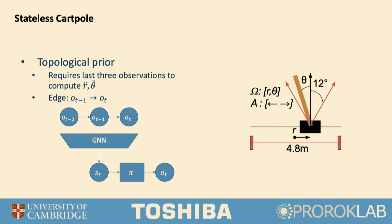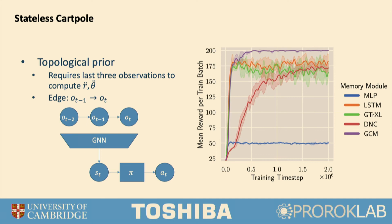We ran experiments comparing GCM against state-of-the-art sequence models. On the x-axis is training time step; on the y-axis is reward. Baselines include an MLP with no memory, LSTM, GTrXL — a transformer designed specifically for reinforcement learning — and DNC, the differentiable neural computer. GCM is in purple. Two things to point out: GCM is really the only one that can converge to the maximum reward here. And second, the variance shading — these other sequence models tend to have quite a lot of wiggle and high-variance shading, whereas with GCM there's quite little variance, and once you converge, you stay converged.